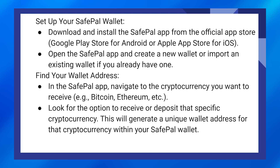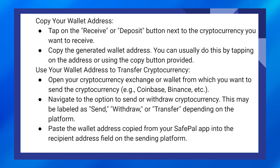In the Safepal app, navigate to the cryptocurrency you want to receive. Look for the option to receive or deposit that specific cryptocurrency. This will generate a unique wallet address for that cryptocurrency within your Safepal wallet. Tap on the receive or deposit button next to the cryptocurrency you want to receive, and copy the generated wallet address. You can usually do this by tapping on the address or using the copy button provided.